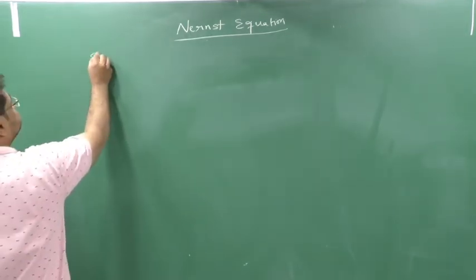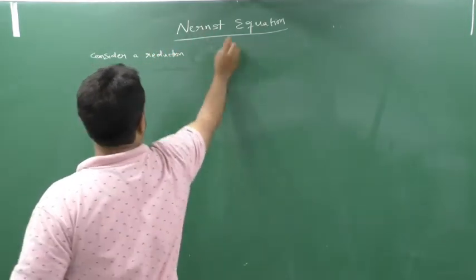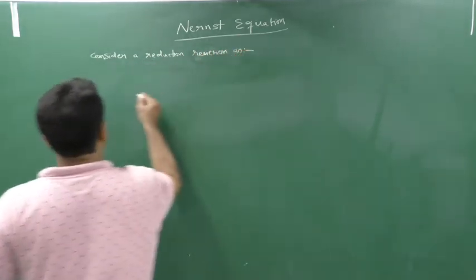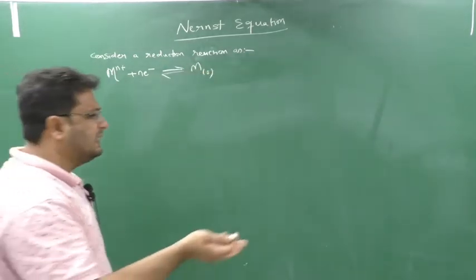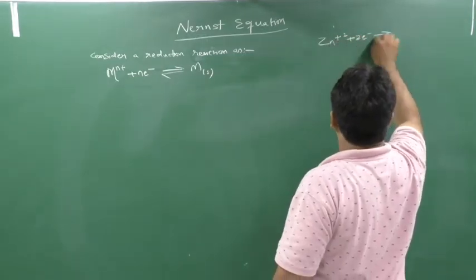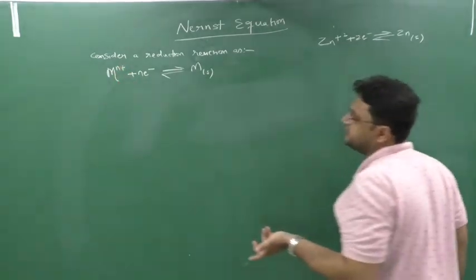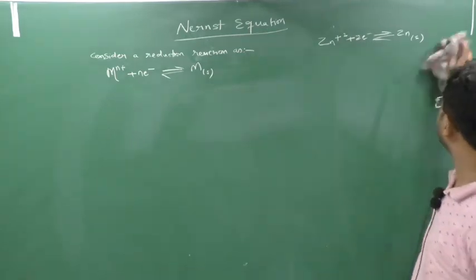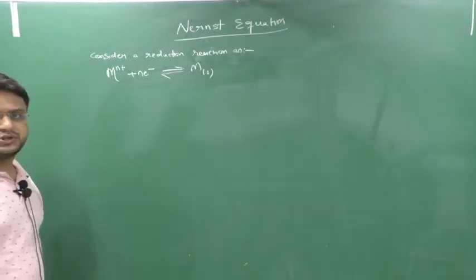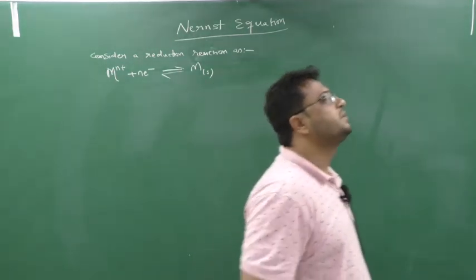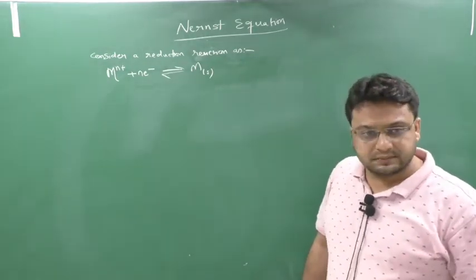Consider a reduction half-reaction: Mⁿ⁺ + n electrons → M solid. For example, Zn²⁺ + 2 electrons → Zn solid, where Zn is the metal M, 2 is the number of electrons n, and Zn solid is M solid. This is the general reduction reaction form. We write reduction reaction — not oxidation reaction — because IUPAC says all electrochemical cell principles work on reduction reaction.